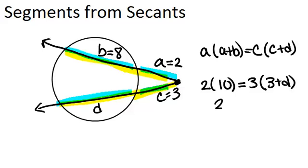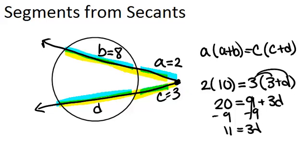we'll multiply 2 times 10 and get 20, and then distribute our 3 to have 9 plus 3D. And then we can just continue to solve this: 11 equals 3D, so D equals 11 thirds. So if you knew any three of these segments, you could use this relationship here in order to solve for the fourth segment.